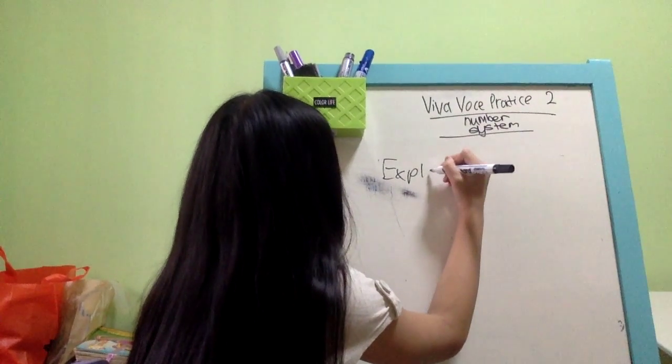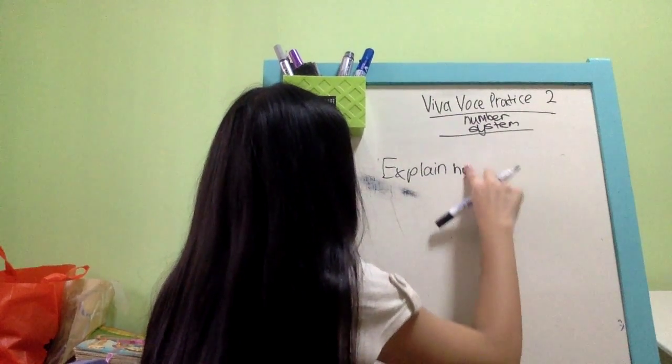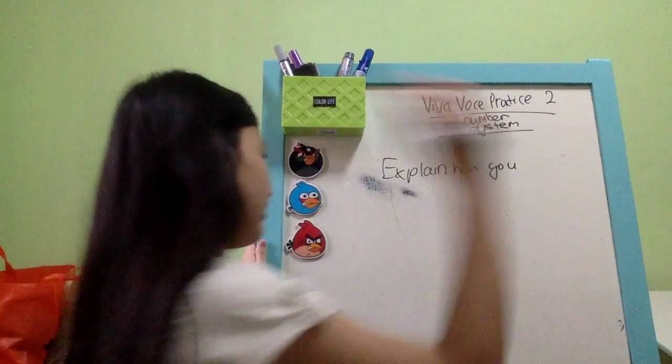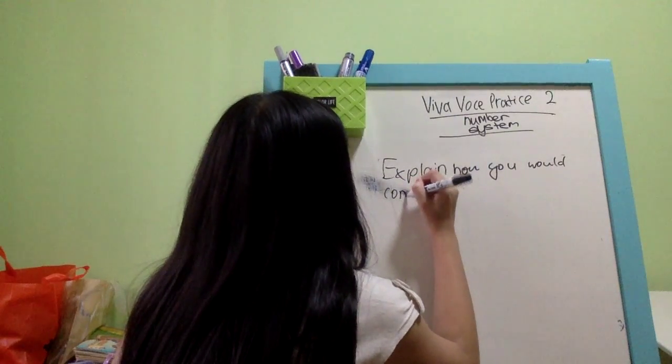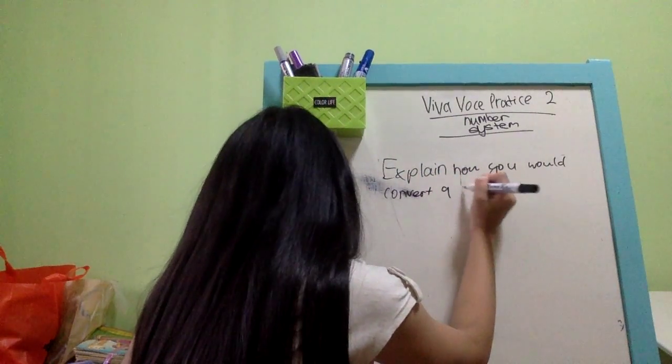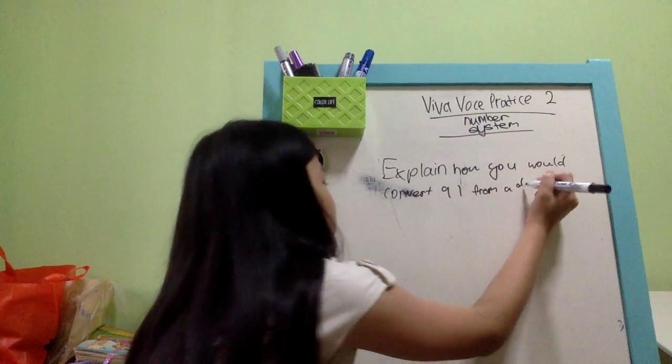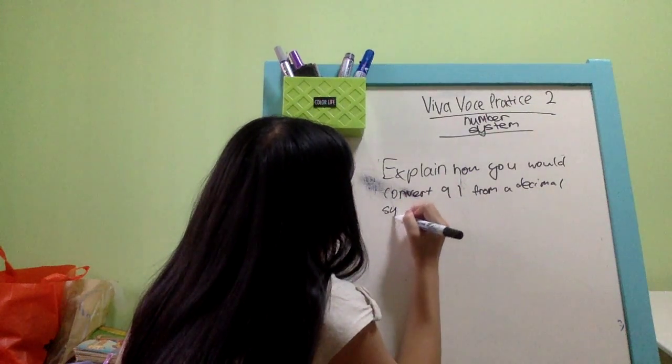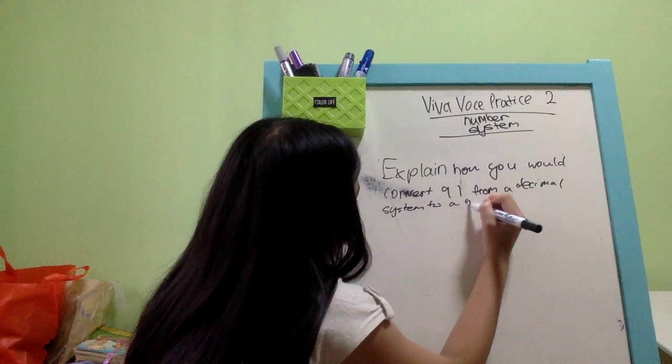Explain how. I'll try to write as fast as I can. Convert 91 from a decimal system to a binary system.